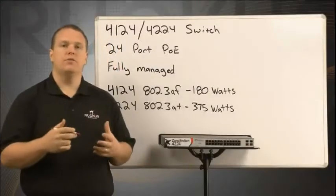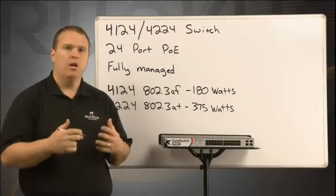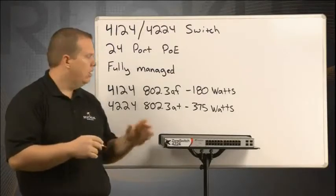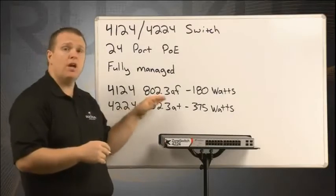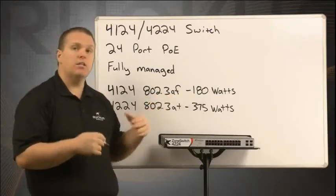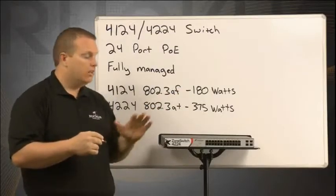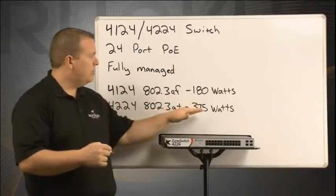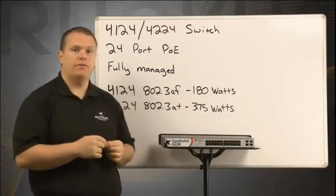The only differences in the 4124 and the 4224 are that of how much power they can push out of their PoE ports. The 4124 is 802.3 AF power only. It has a maximum capacity of 180 watts. The 4224 does 802.3 AT with a maximum power of 375 watts.